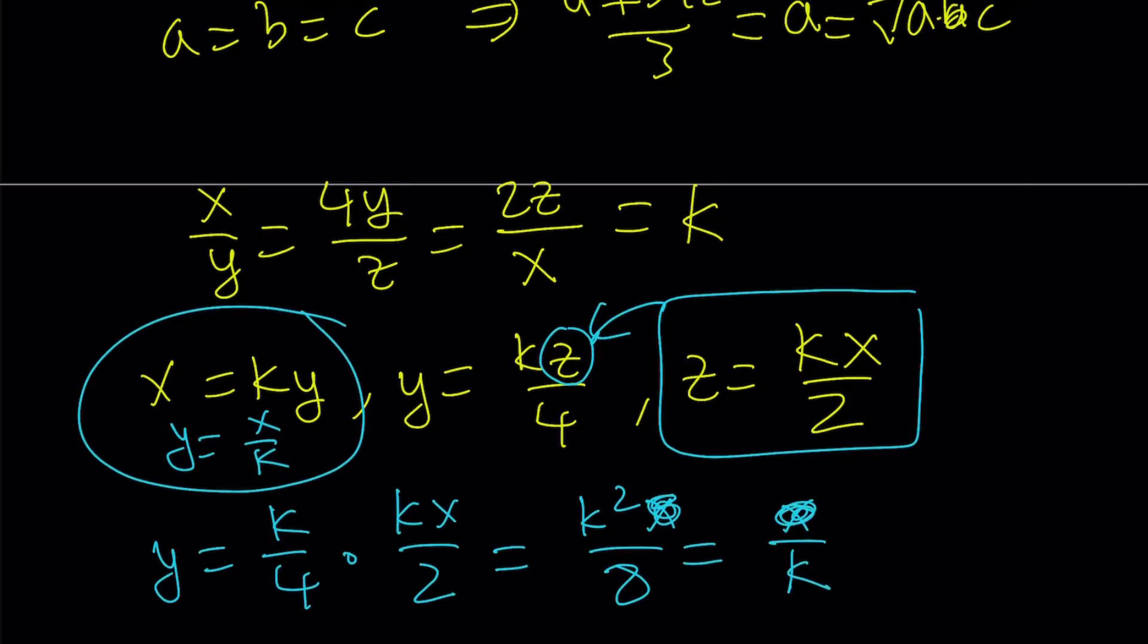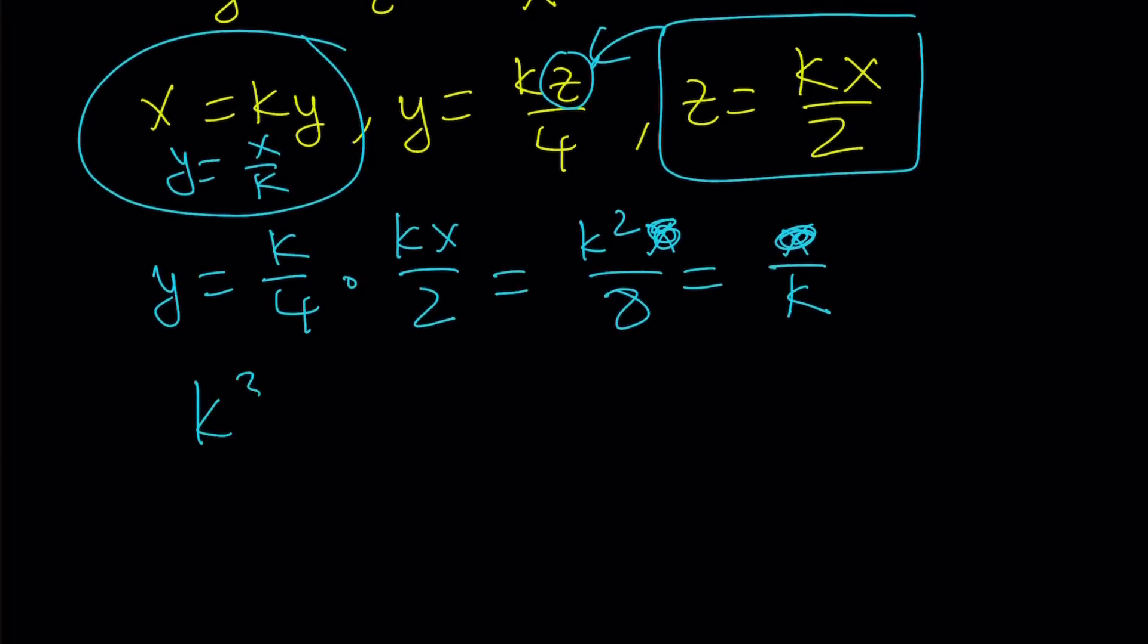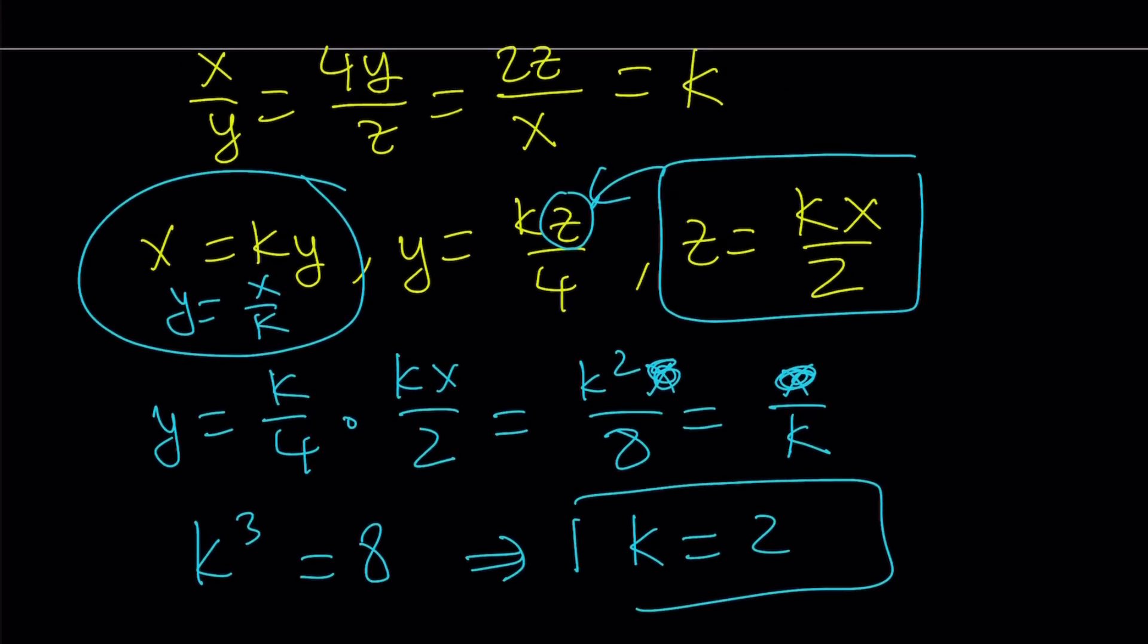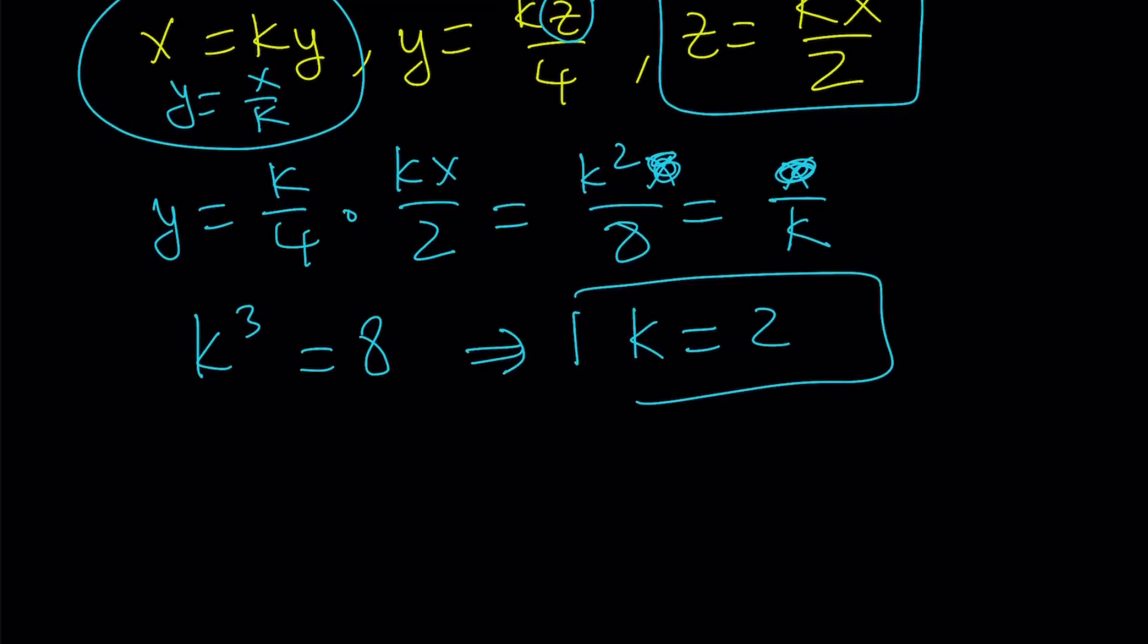And I get k cubed equals 8, which is nice, because this gives me k equals 2. And what is that supposed to mean? It means that when all of these are equal to 2, it works, and obviously 2 plus 2 plus 2 equals 6, which is the minimum value of this sum.